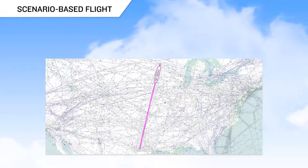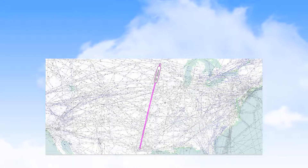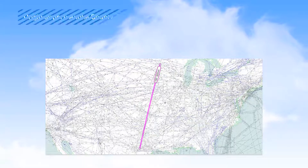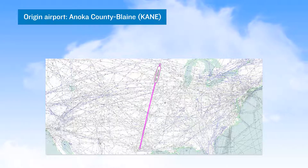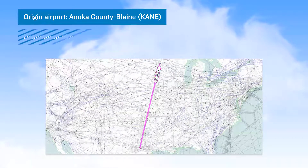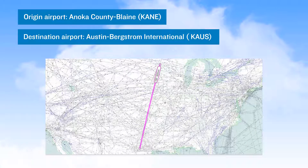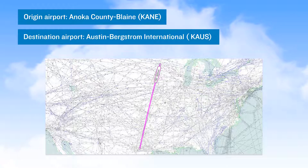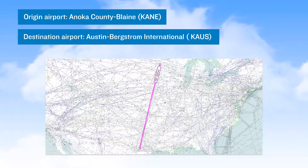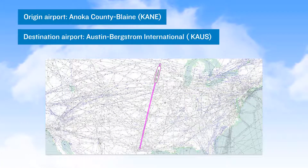Welcome to our scenario-based flight using Garmin Pilot. In this video, we provide an example of how Garmin Pilot is used while conducting a flight from Anoka County Blaine Airport in Minneapolis to Austin Bergstrom International. In this scenario, we've been assigned a flight to bring the president of the company to Austin, Texas for a two-week vacation.